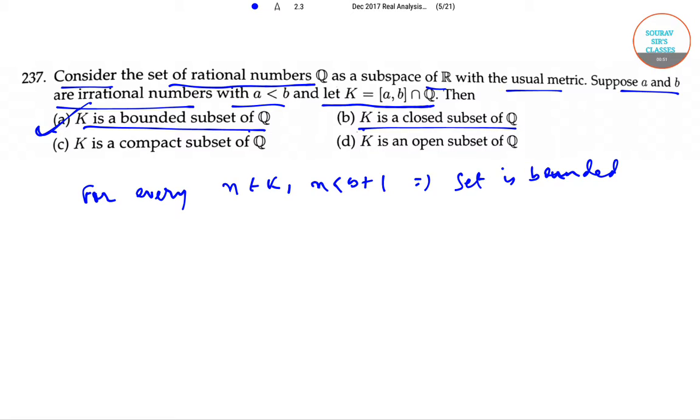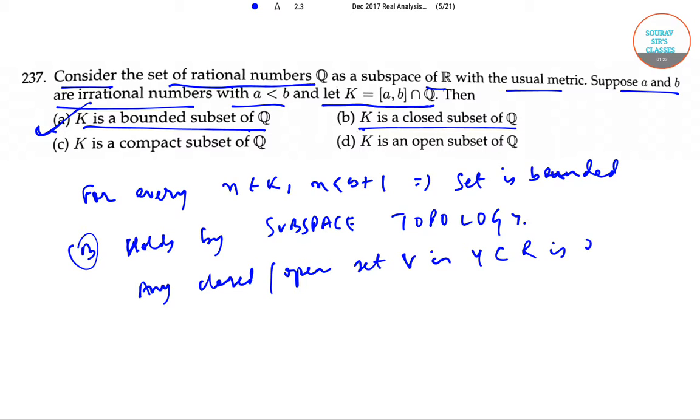Option b: K is a closed subset of Q. This holds by subspace topology. Any closed or open set V in Y subset of R is of form A intersection Y, where A is a closed or open set in R. When closed is over here, it should also be over here. And when it is open over here, it should be open over here. So option b is also correct.